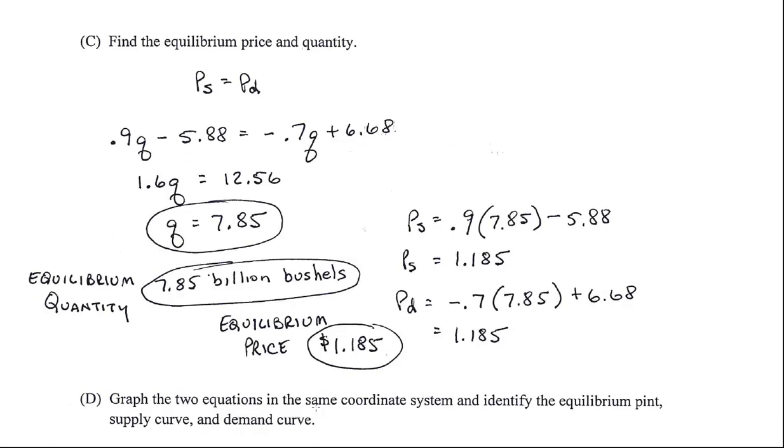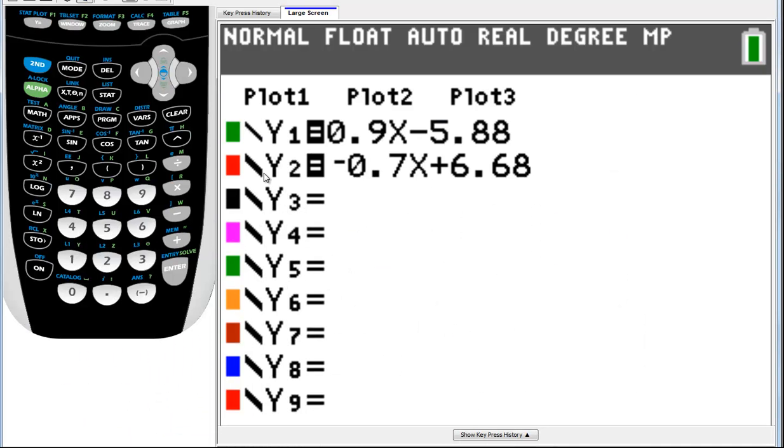They want us to graph the two equations in the same coordinate system and identify the equilibrium point, so the supply curve and the demand curve. Now, I've got the new graphing color calculator, so that's nice because I can put my equations in in color, which I've already done. Remember, the green is my supply and the red is my demand. Now, I always put my supply in the first one because in these calculators, the Y1 will always graph. But in this calculator, I've got to go back to Y and X to graphs, but this is P and this is Q.